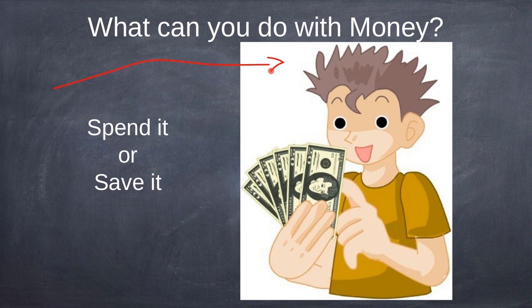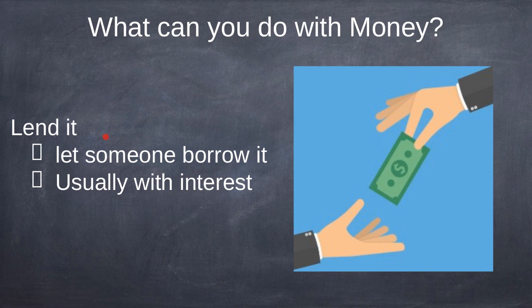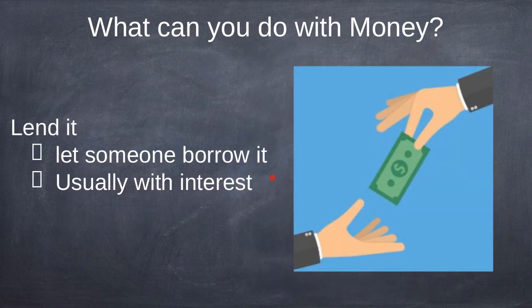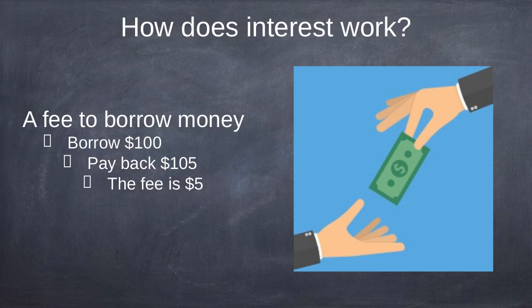You can also lend money to somebody, which means you let someone borrow it, usually with interest. Those are the most obvious things you can do with money: spend it or save it — but there's other things too. If you lend somebody $100, they've got to pay you back $105. So the fee to borrow the $100 is $5. That's how interest works. Just know that if you borrow a certain amount of money, you usually pay back more than what you borrowed.